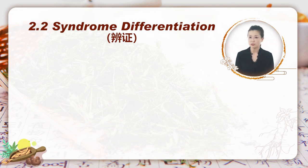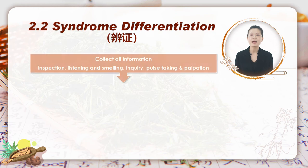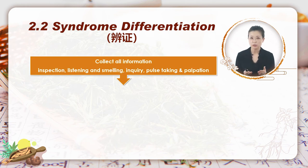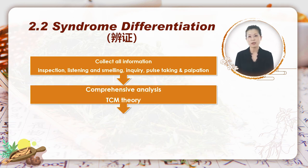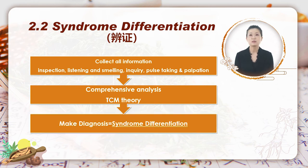After being clear about syndrome, it is easier to understand syndrome differentiation. When a TCM practitioner sees a patient, he will collect all information through inspection, listening and smelling, inquiring, pulse-taking, and palpation — the four diagnostic methods in TCM. After gathering all information, he makes a comprehensive analysis using TCM theory, and then figures out the syndrome of the patient. This whole process is syndrome differentiation.